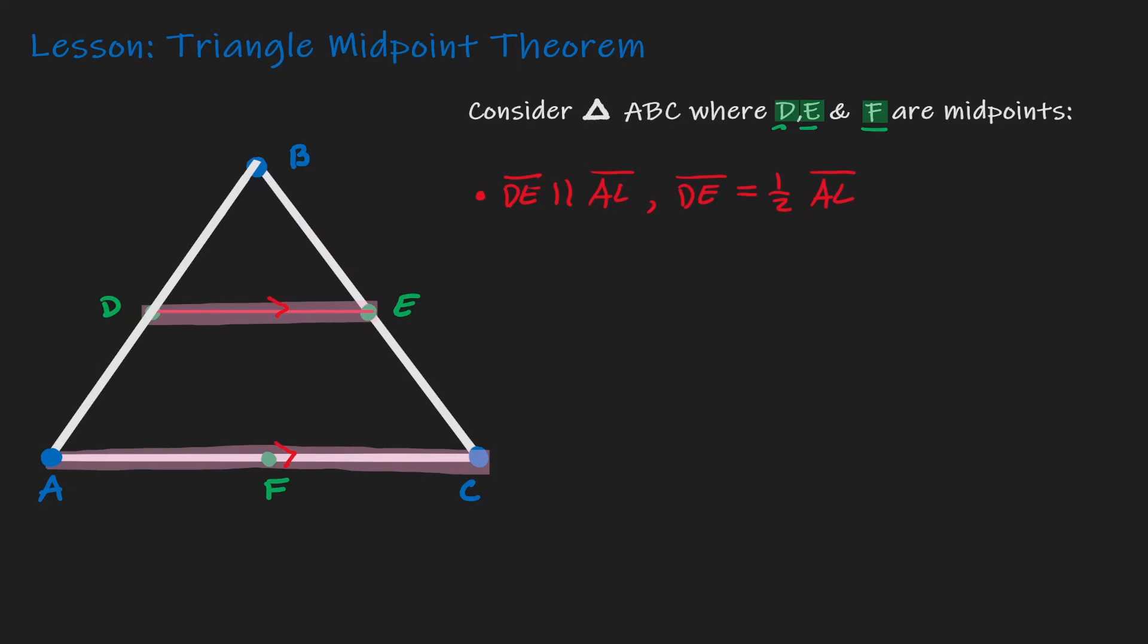Let's connect the midpoint F to the midpoint E. This segment FE has a special relationship with the side that is opposite to it. And that relationship is that FE is parallel to AB. So let's put down a diagram. And in addition, FE is half the length of its opposite side, which is AB.